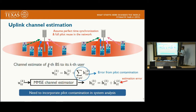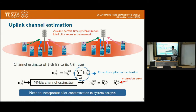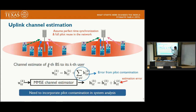In massive MIMO networks, channel estimation is performed in the uplink, where all scheduled users send their pilots to the base station. The base station uses the orthogonality of the pilots to obtain an observation of the desired link — here the observation is denoted by U. The observation is contaminated by interference from other-cell users using the same pilot, which we call pilot contamination. Even with MMSE channel estimation, the pilot contamination error will still remain after channel estimation, so we need to incorporate pilot contamination in our analysis.